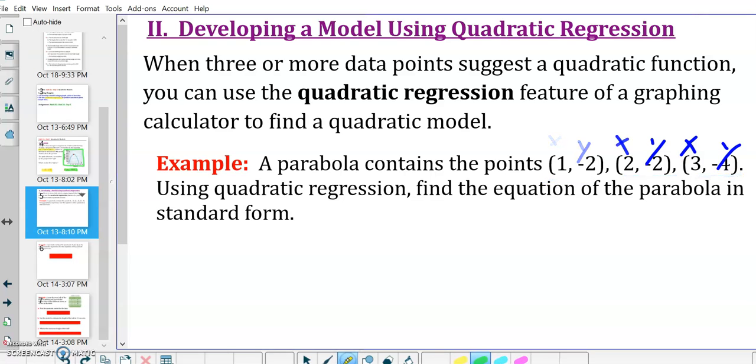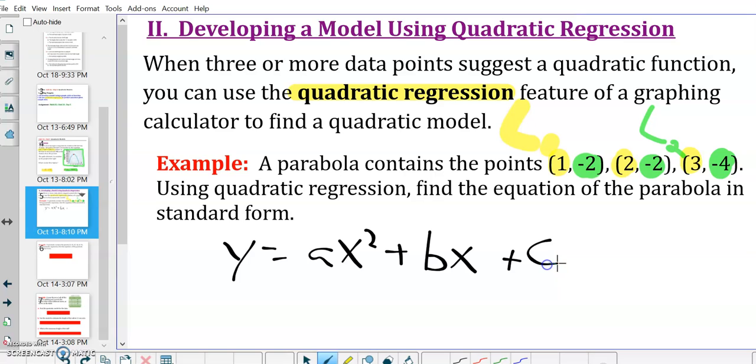Now, what I'm going to do is I'm going to use the quadratic regression feature on my TI calculator. And I'm going to type all of my x values into the list one. And then I'll type all of my y values into list two. Once I've done that, I can select quadratic regression, and it's going to give me the values for A, B, and C, assuming that we are written in standard form. All right. So let's go ahead and do that.